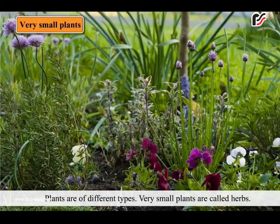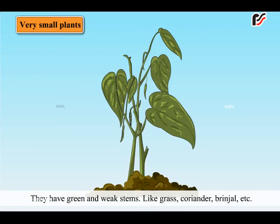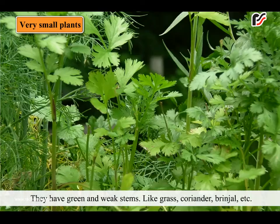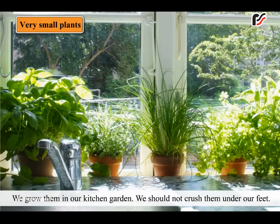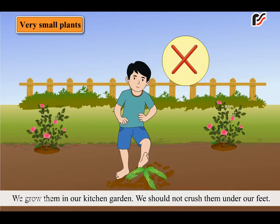Plants are of different types. Very small plants are called herbs. They have green and weak stems, like grass, coriander, brinjal etc. We grow them in our kitchen garden. We should not crush them under our feet.